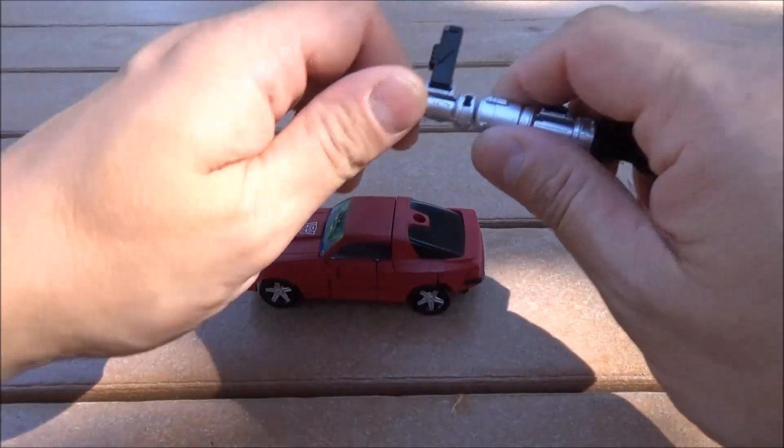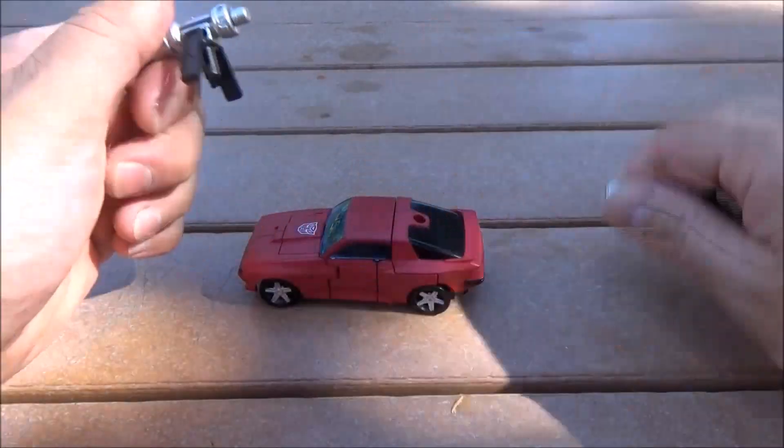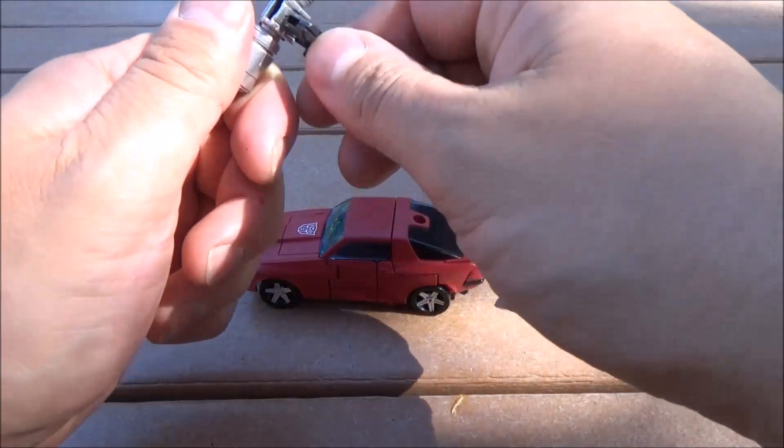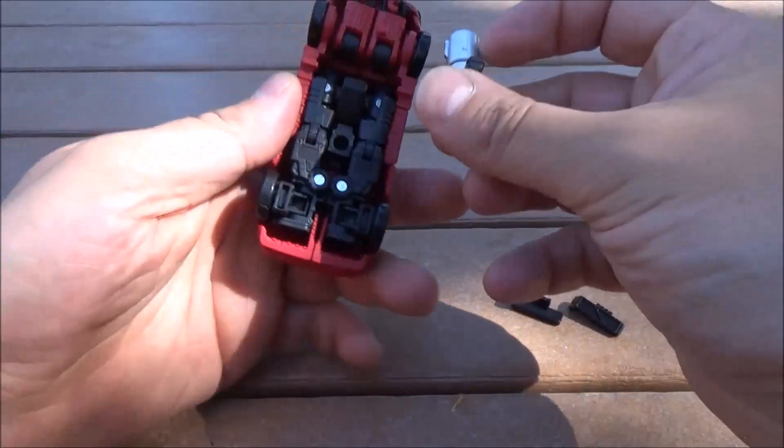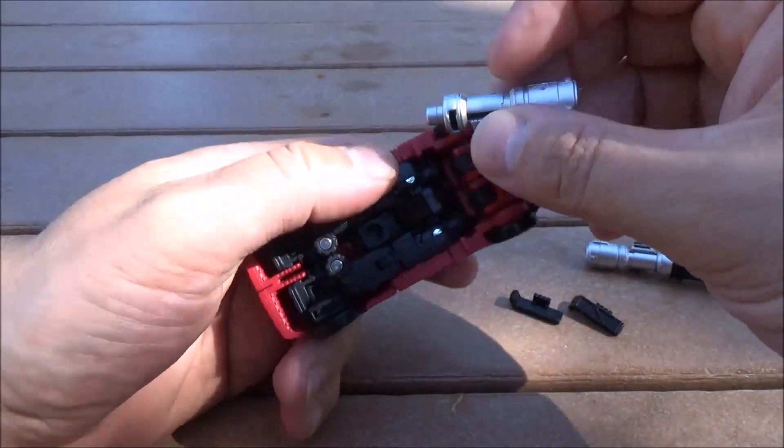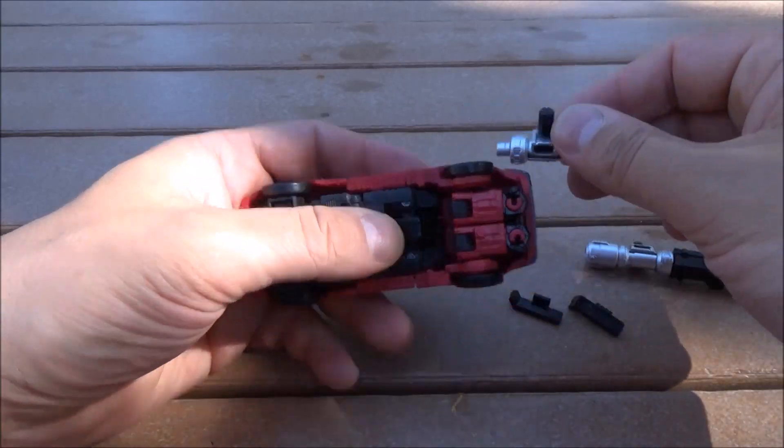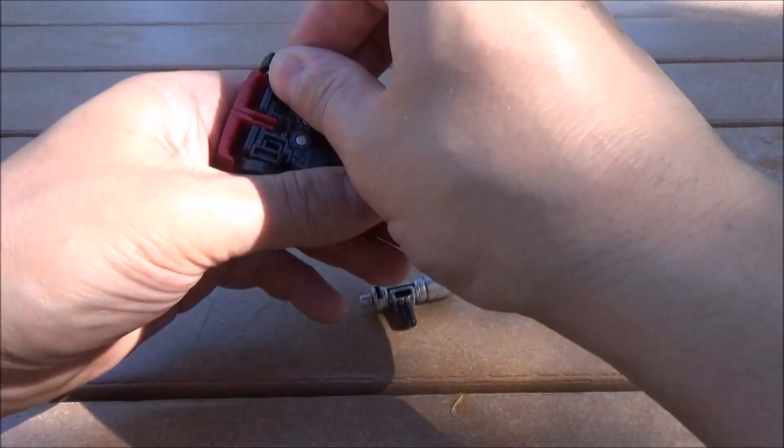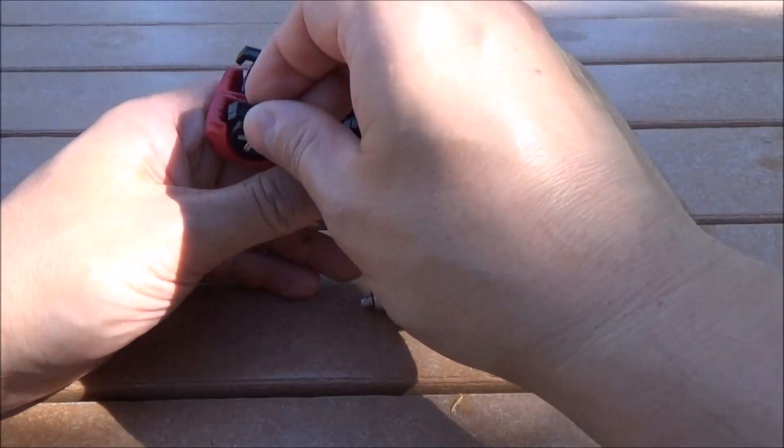Now, also in this mode, with this cannon here, we can disassemble it to do something of an esoteric rocket car mode. Just got to get everything hooked up here. Okay. There's a way to do it.